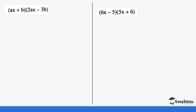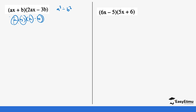Let's do a few more examples. Remember it's a squared minus b squared, so this is your a and this is your b. But notice — in the case where we have the identity (a plus b)(a minus b), our values of a are the same and our values of b are the same, the only difference is the plus and minus. But here, ax and 2ax are different, and b and 3b are different.